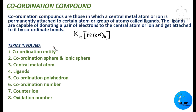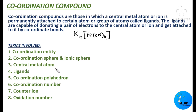The important terms we are going to see today are: coordination entity, coordination sphere and ionic sphere, central metal atom, ligands, coordination polyhedron, coordination number, counter ion, and oxidation number. Out of these, central metal atom and oxidation number are known terms, but the others are new.